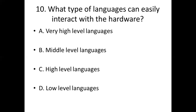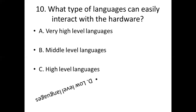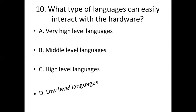Tenth bit: What type of languages can easily interact with the hardware? Option A: very high level languages. Option B: middle level languages. Option C: high level languages. Option D: low level languages. Answer: Option D — low level languages.